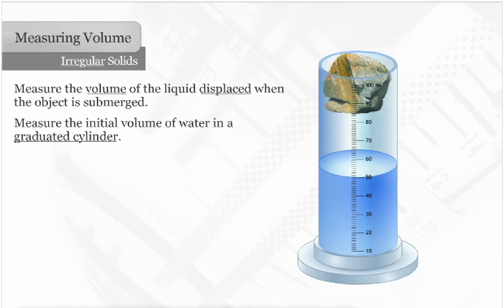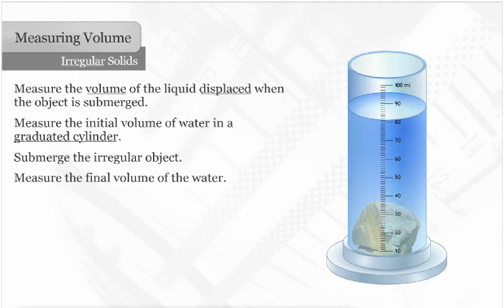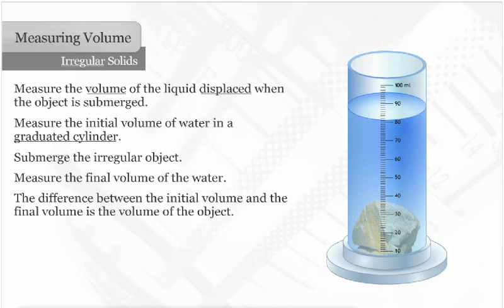To do this, measure the initial volume of water in a graduated cylinder, submerge the irregular object, and measure the final volume of the water. The difference between the initial volume and the final volume is the volume of the object.